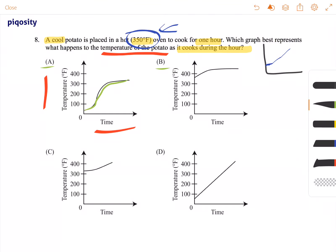B starts the potato at almost above 350 degrees. So this is not a cool potato. This is a hot potato. So we're not going to even bother looking at this one.